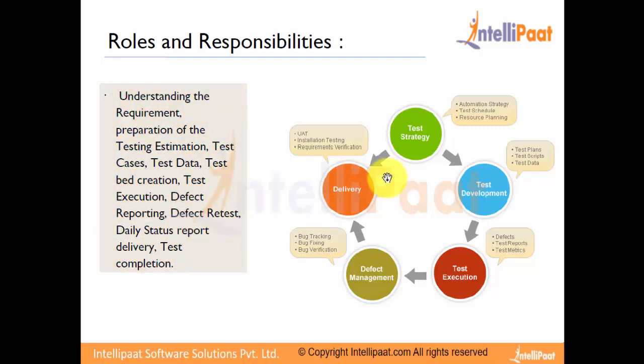The first thing we are going to discuss is test strategy. Once we have a proposed solution to our problem, we need to plan or strategize our testing. We may discuss the automation strategy we may use, plan the testing schedule that depends on our delivery dates, and discuss resource planning. The automation strategy will help us reduce the manual effort required in testing the product.